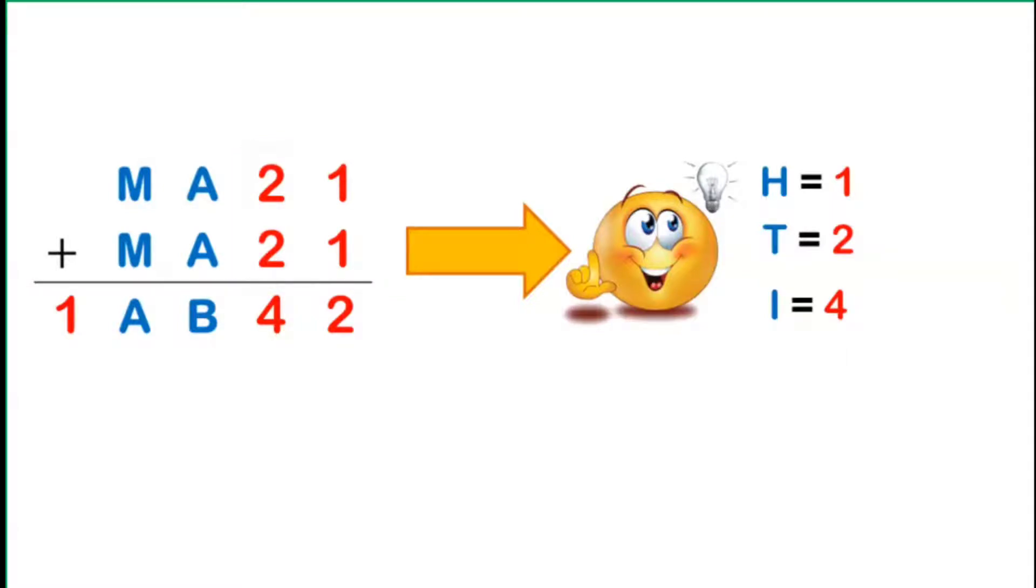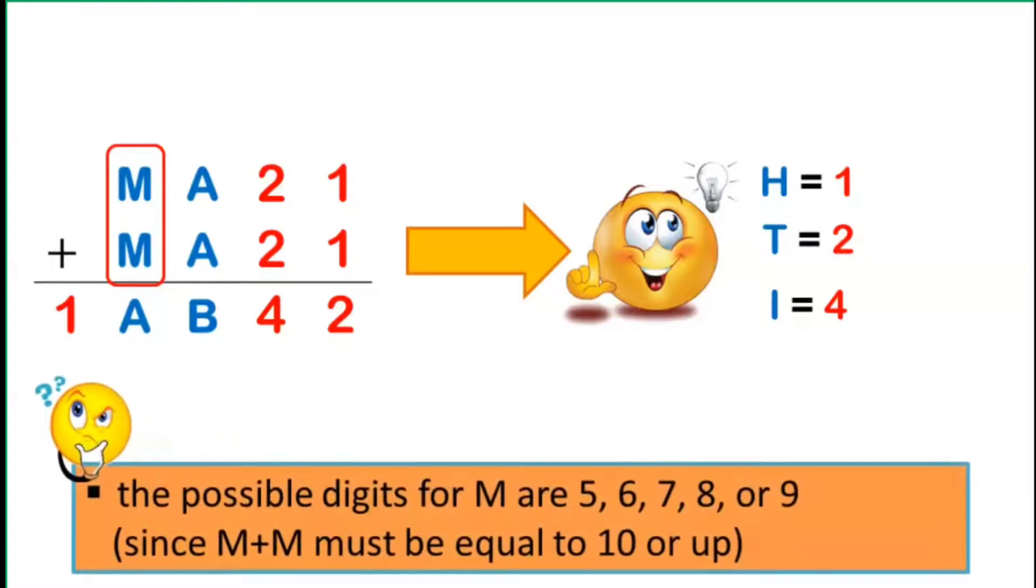At this point, we go back with M plus M. It must be obvious that the possible digits for M are 5, 6, 7, 8, or 9, since M plus M must be equal to 10 or up. We may test for each possible digit to find the correct one for M.